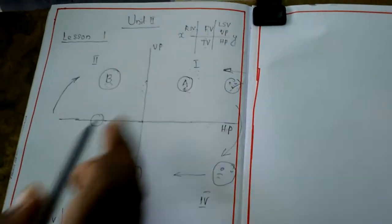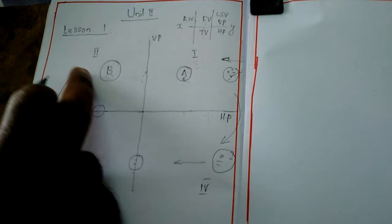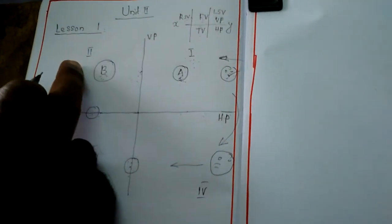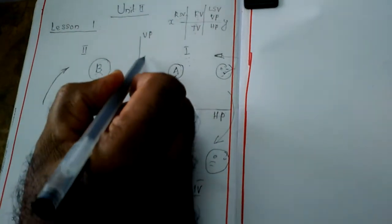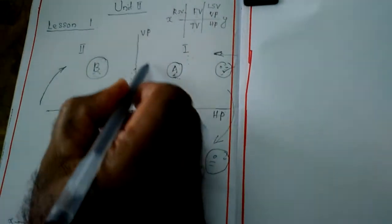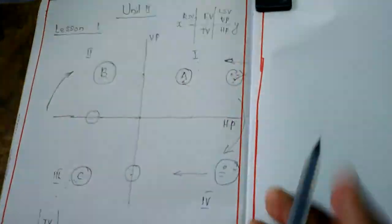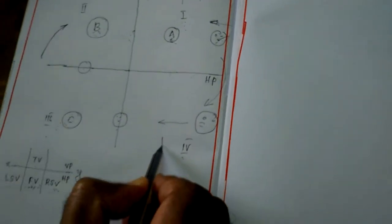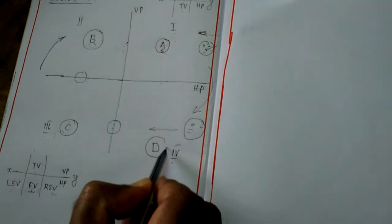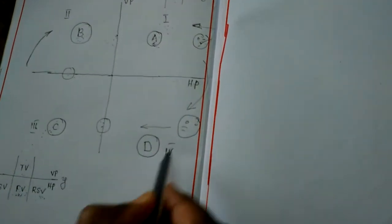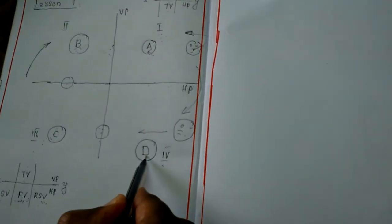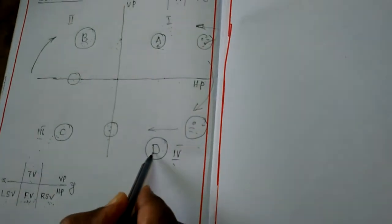We use first angle and third angle in general practice. The second angle projection method should not be used because the front view and top view both occupy above the XY line, and sometimes both coincide with each other. That's why we should not use it. Similarly, in fourth angle projection method, suppose the object is D — you are the observer looking at the picture.